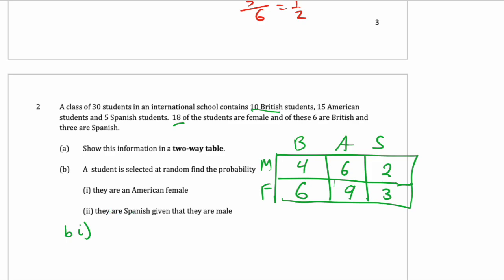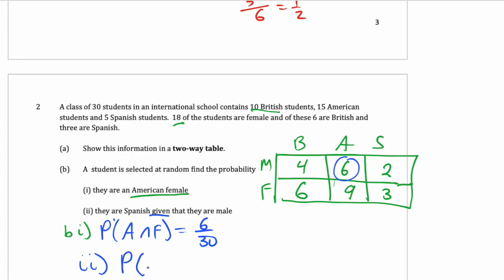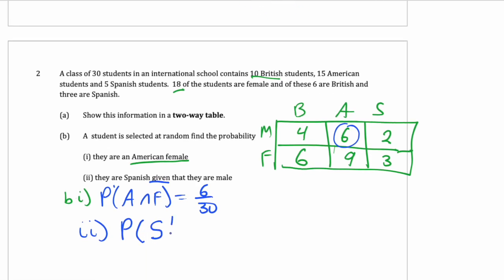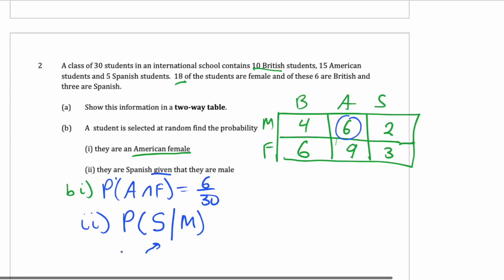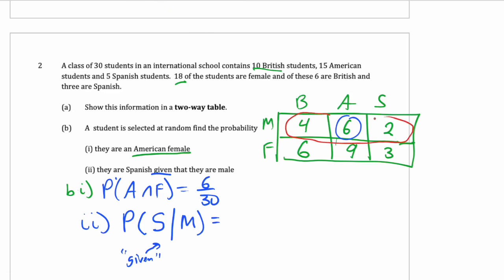Now we can work out these probabilities. You randomly pick a student — what's the probability it's an American female? American female is just 6 of them, so P(American and female) = 6 out of 30. Next, the probability of being Spanish given they are male: this symbol means 'given,' so we're restricted to the males, which is 12 of them — that's the denominator. Of those 12, 2 are Spanish, so that probability is 2 over 12.